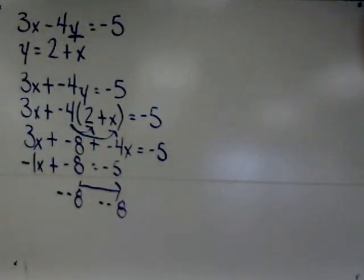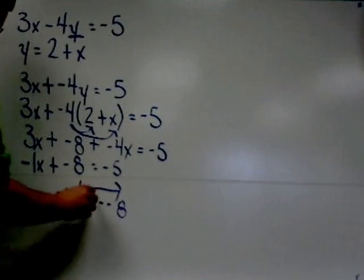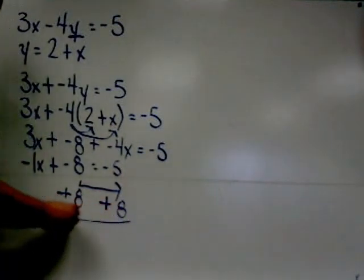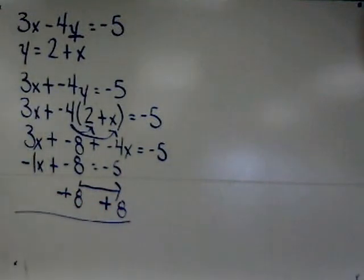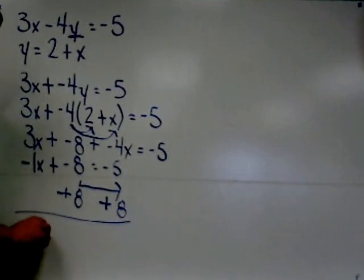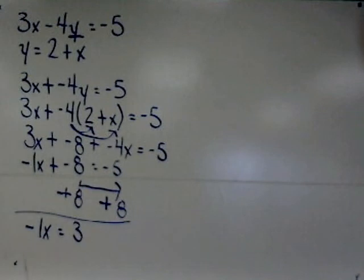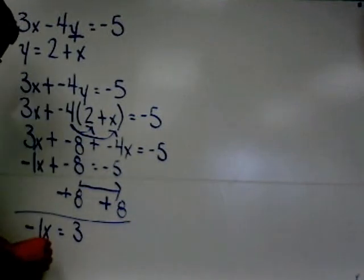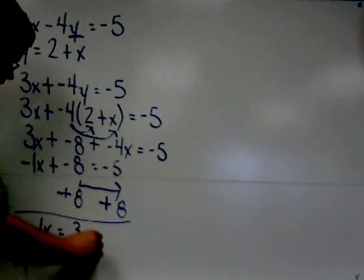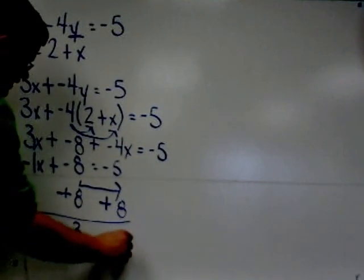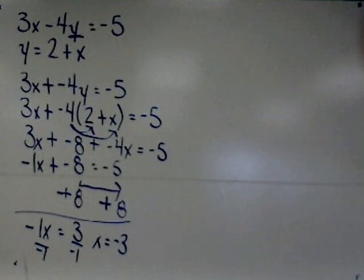We have learned throughout this year, however, that subtracting a negative is truly the same as adding. So what we're really doing is we're adding 8 to both sides of the equal sign. The simplified expression is thus negative 1x equals 3. So now I simply need to divide across by negative 1 and I obtain a value of x, which is negative 3.